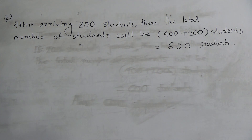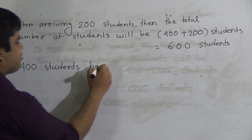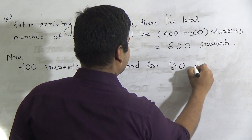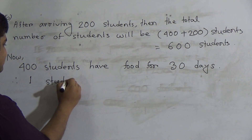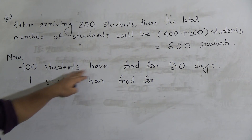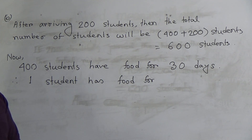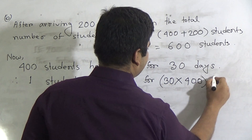Now, the stem says 400 students have food for 30 days. Therefore, one student has food for: 400 students have food for 30 days, so that amount of food, if one student eats, will need more time to finish. That means we do multiplication: 30 multiplied by 400 days.